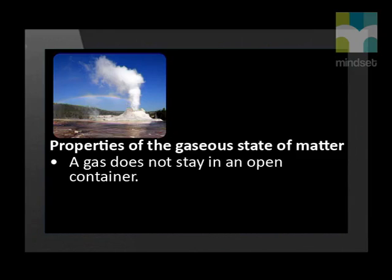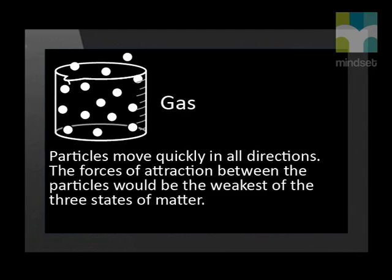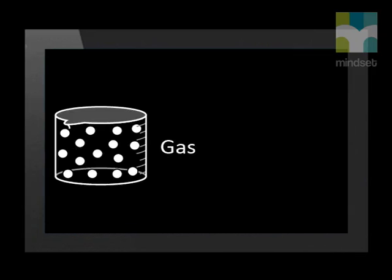A gas is the form of matter where the substance has no fixed shape or volume. A gas takes the shape and the volume of the container in which it is placed. A gas does not stay in an open container — it is able to spread out to fill the available volume. It is very compressible. Microscopically, according to the particle theory, the gas particles will move quickly in all directions. The forces of attraction between the particles would be the weakest of the three states of matter. If the container is sealed, the gas fills the whole volume of the container.